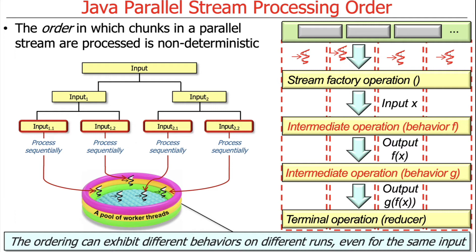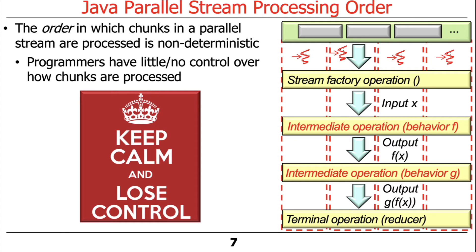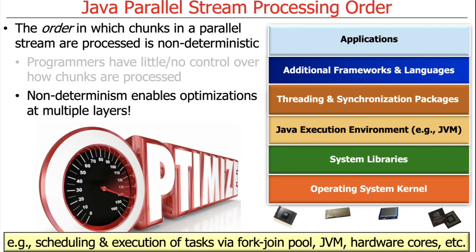You're not supposed to care about chunk processing order, and you don't really care because you have no control over it. Even if you get the same input over and over again, you could get different processing orders depending on various factors. Programmers have little or no control over the order in which chunks are processed, and that's okay.